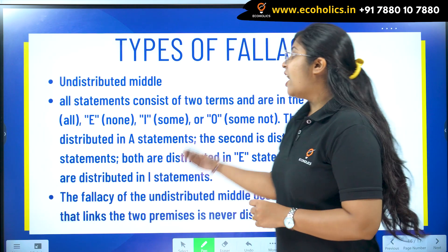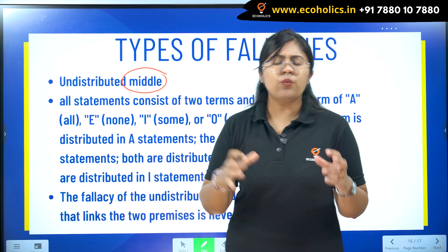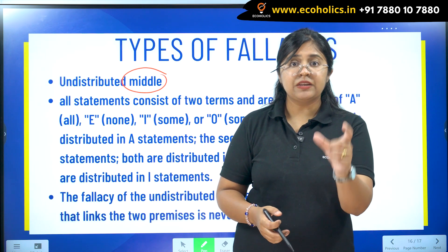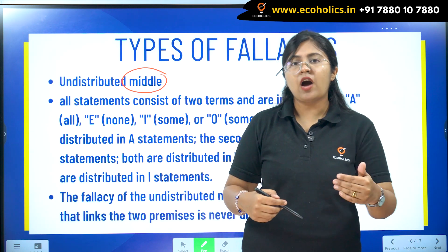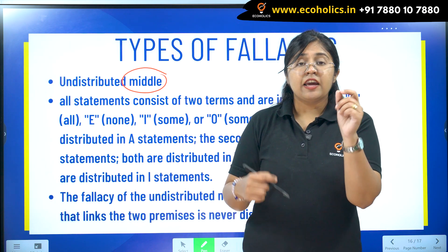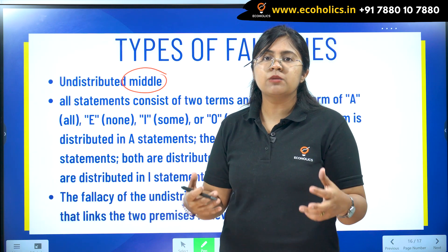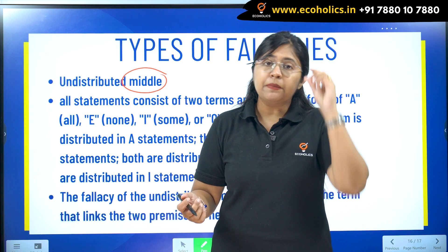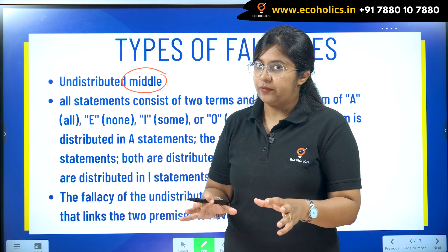This fallacy is the undistributed middle. When we call any term the middle term, it is that term which links the two arguments in the premise. If the arguments are not linked, then the conclusion becomes invalid. So the middle term is very crucial for the arguments.